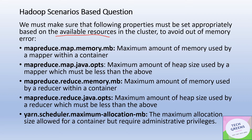The first property is `mapreduce.map.memory.mb` — it is the maximum amount of memory used by a mapper within a particular container. Here, a container refers to one task execution, specifically one map execution. This property defines the maximum memory that can be allocated for a mapper. A complementary property is `mapreduce.map.java.opts`, which defines the maximum heap size used by a mapper.